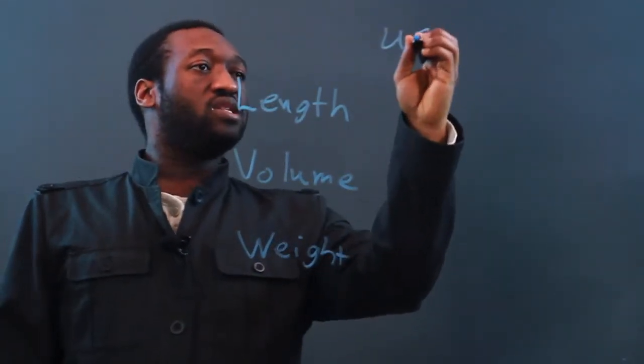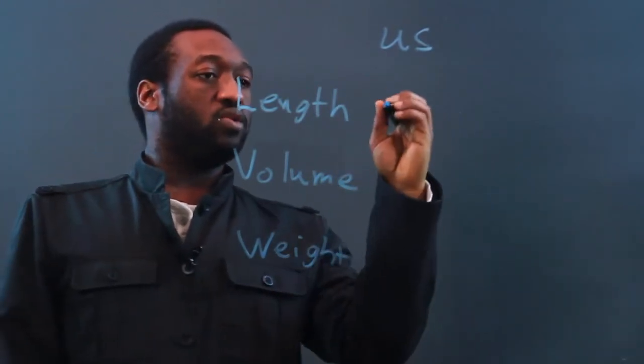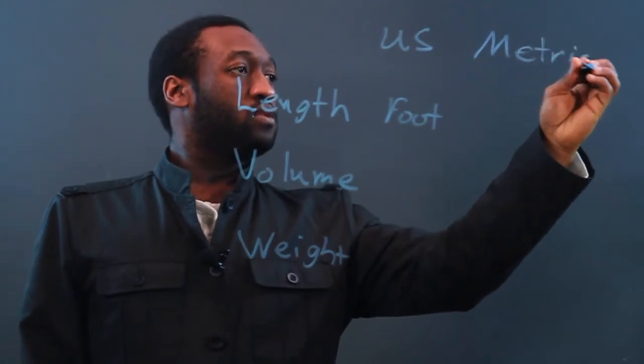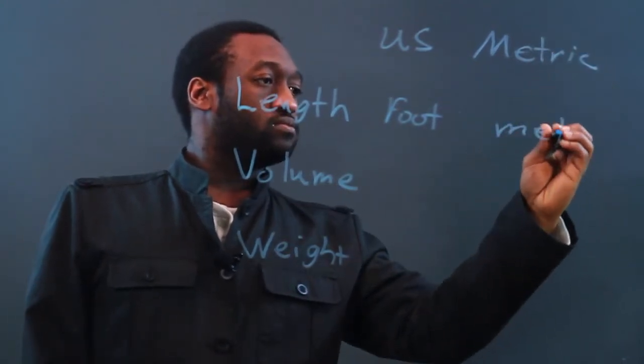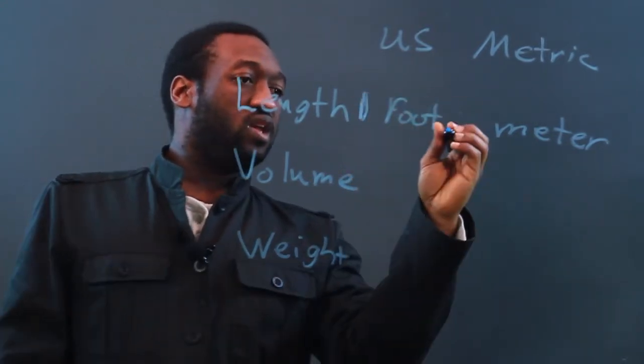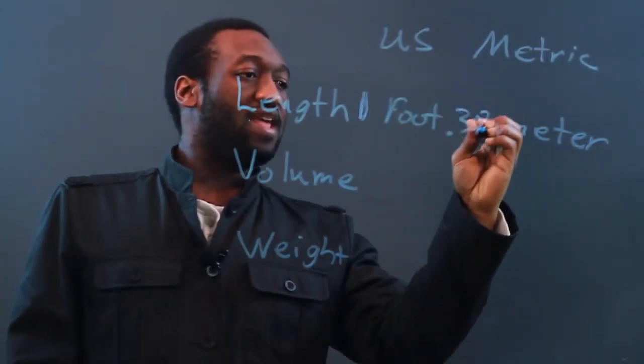Now, in the U.S., to measure length, we use the foot. And in the metric system, we use the meter. And just for comparison, one foot equals .3078 meters.